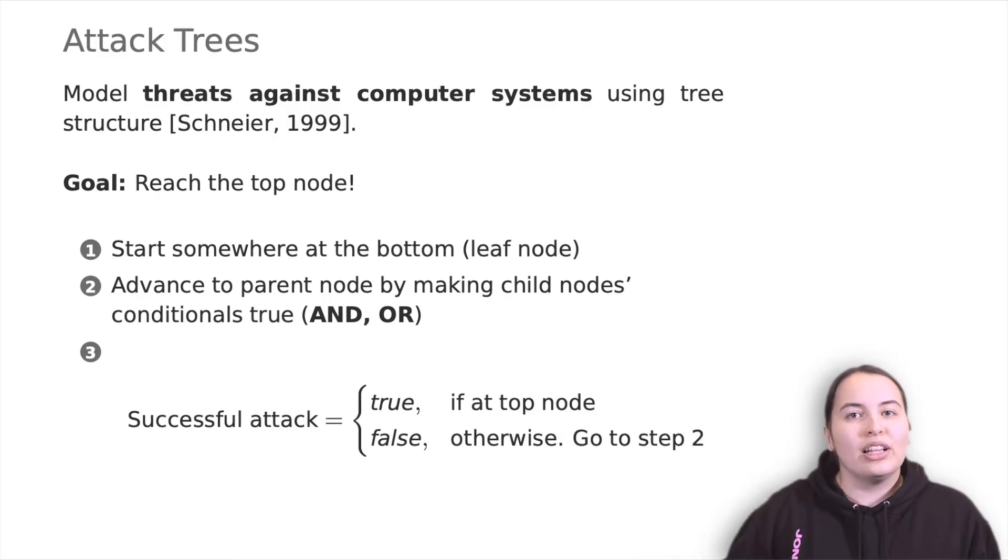From the bottom up, child nodes are conditions which must be satisfied to make the direct parent node true. When the root is satisfied, the attack is complete. Each node may be satisfied only by its direct child nodes.